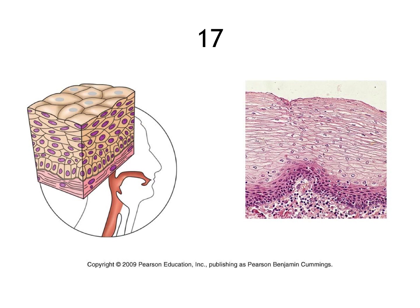This is stratified squamous — you can see it looks like little stacked-up eyeballs on the right, and it has a free surface. I hope this review was helpful. If you have any questions or are looking for additional information, let me know in the comments. Good luck on your tests and quizzes. This is Mr. Sater at Dublin Scioto High School.